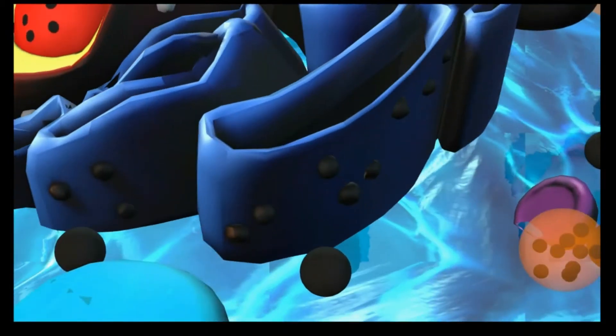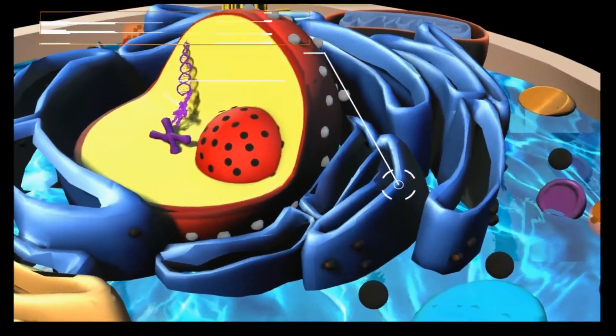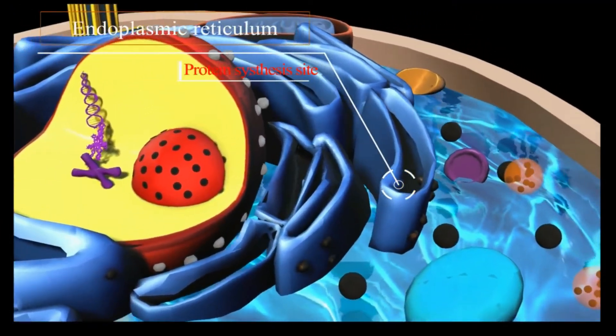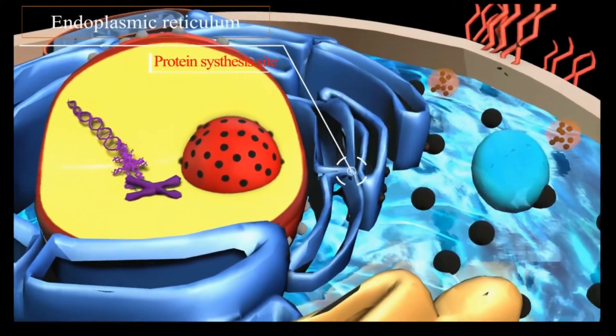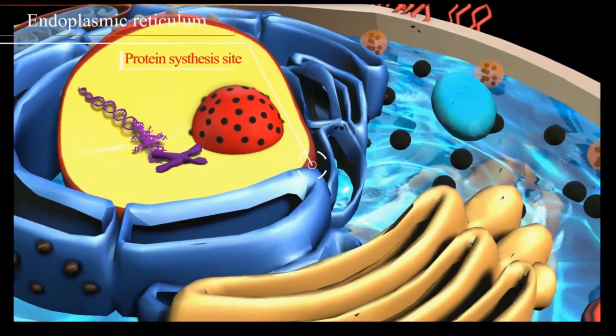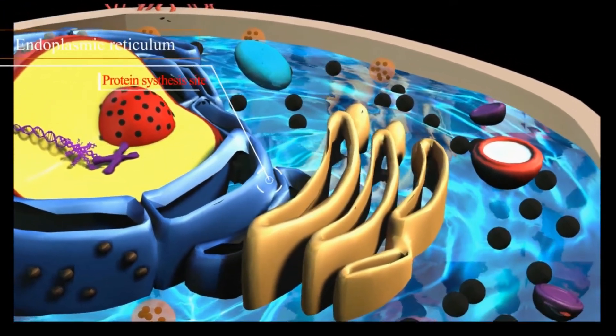The endoplasmic reticulum is a large organelle made of membranous sheets and tubules that begin near the nucleus and extend across the cell. The endoplasmic reticulum creates, packages, and secretes many of the products created by a cell.